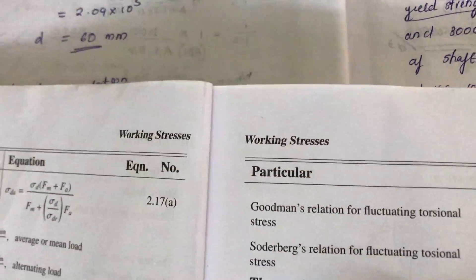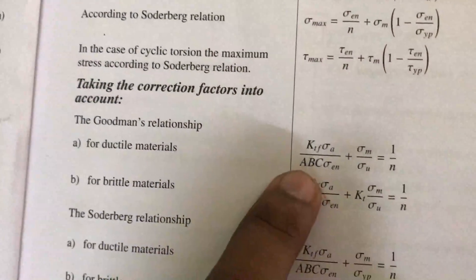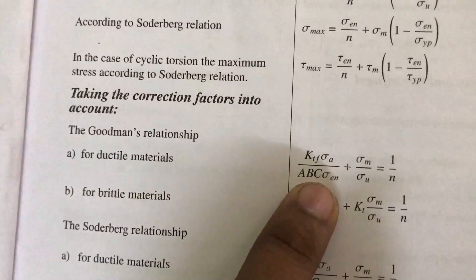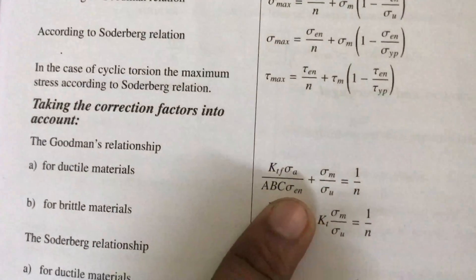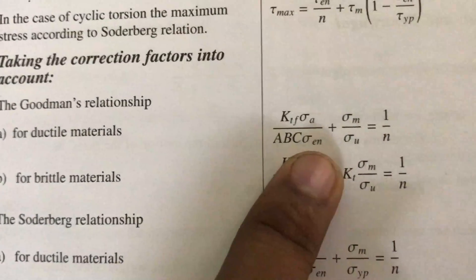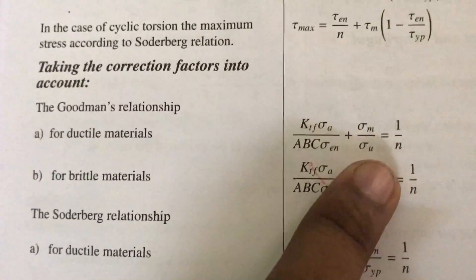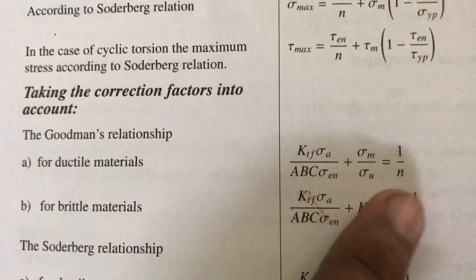A can be assumed as 1, B as 0.85, and C as 0.9. Sigma EN (endurance limit) and ultimate strength are given in the question, so we can substitute those values.